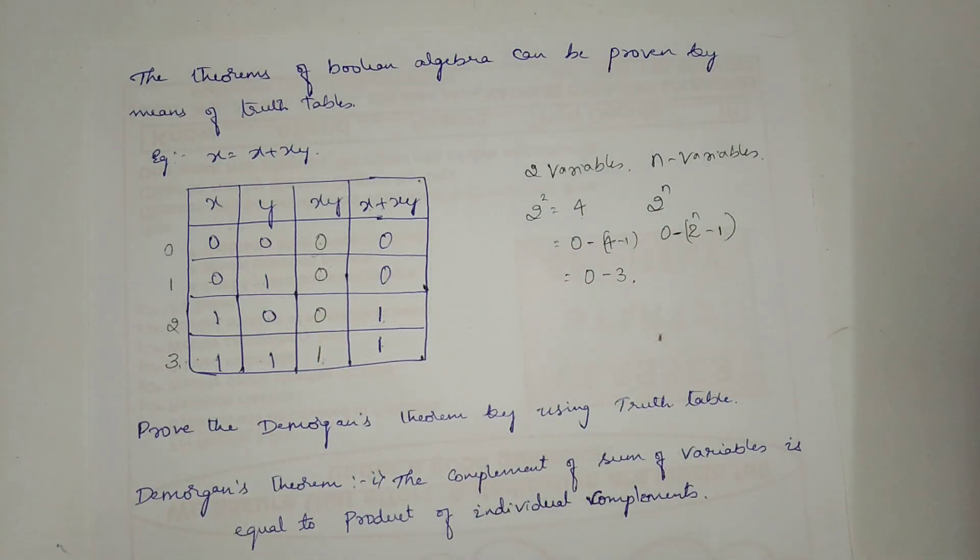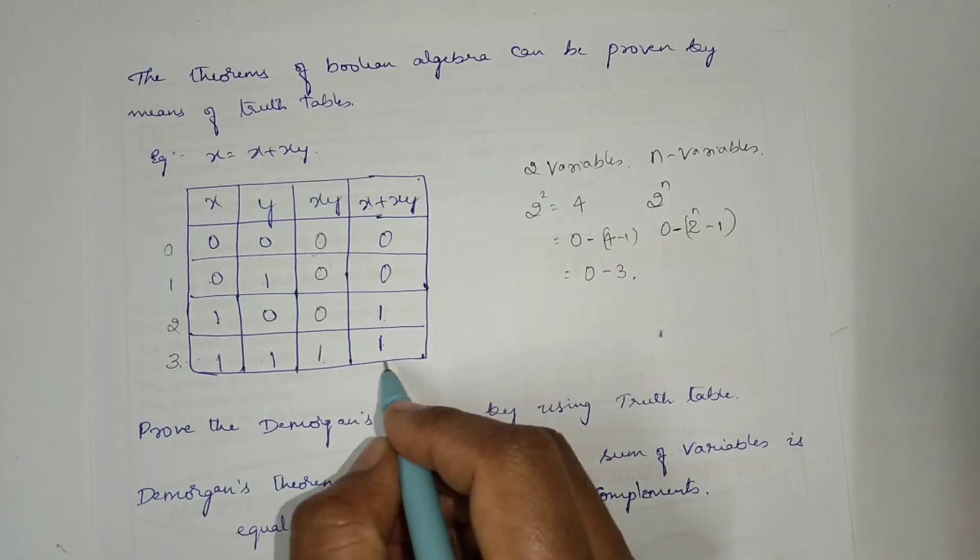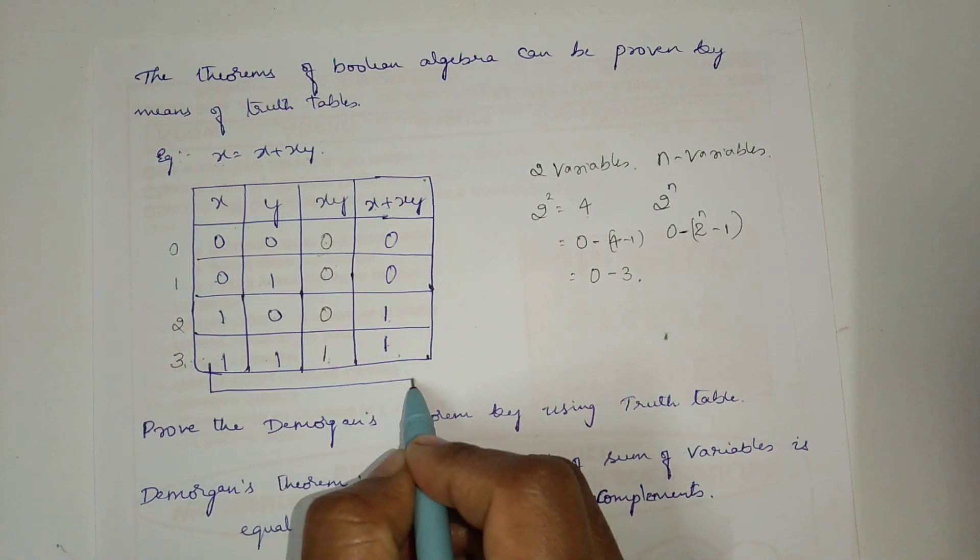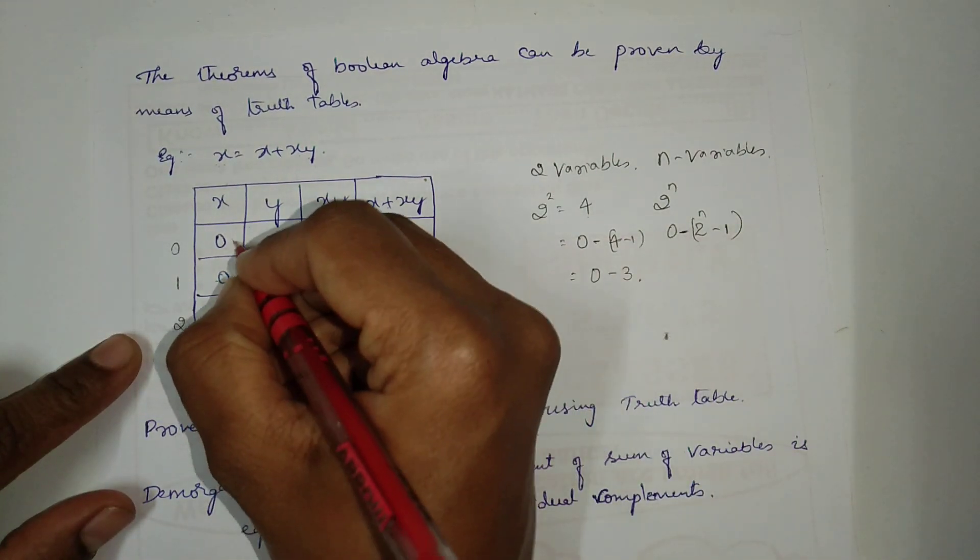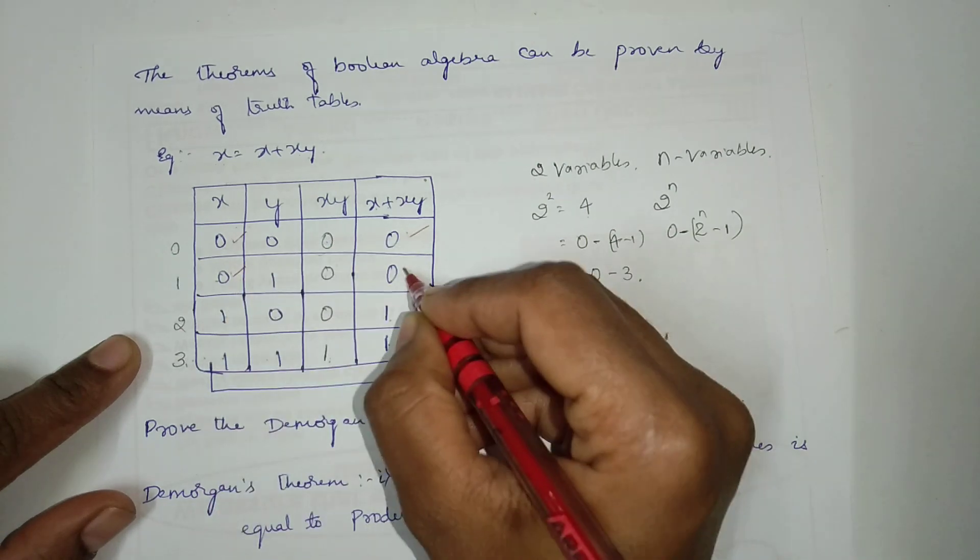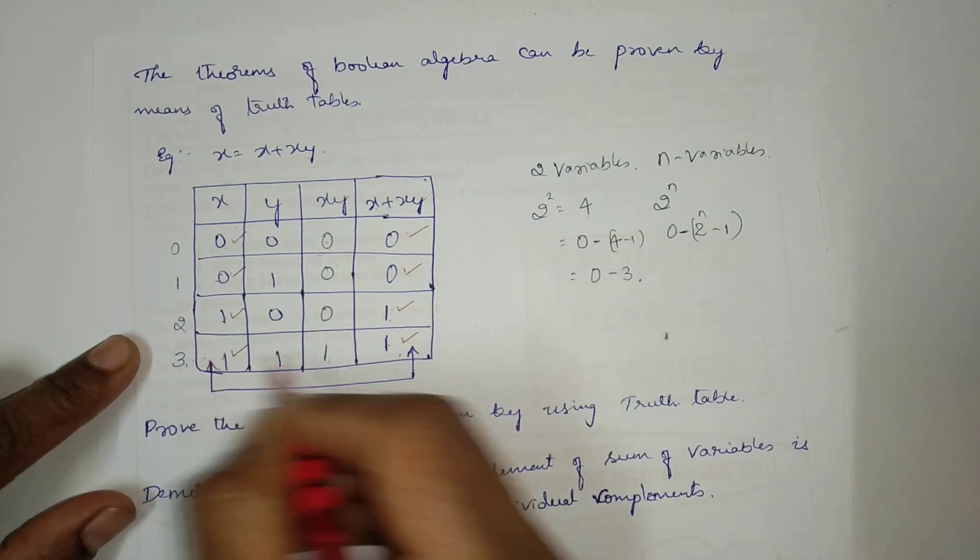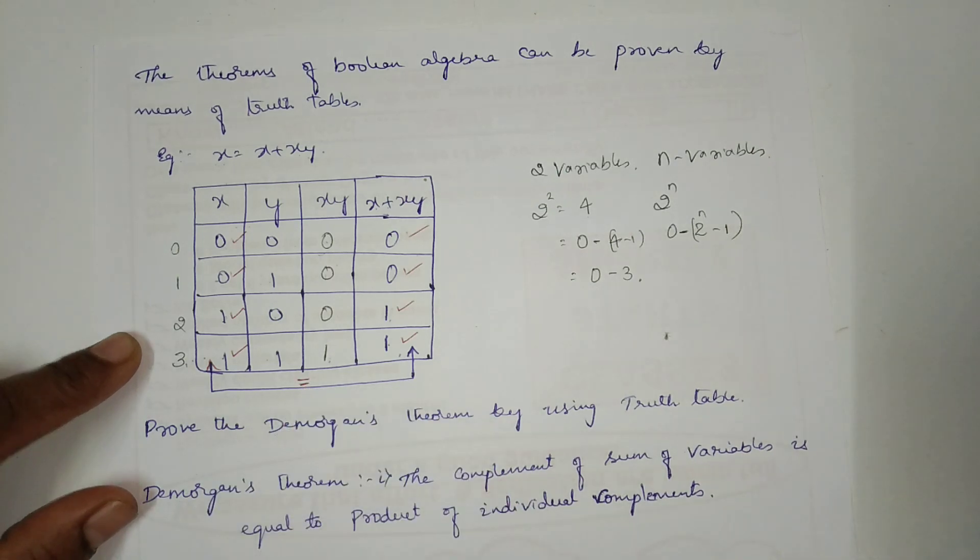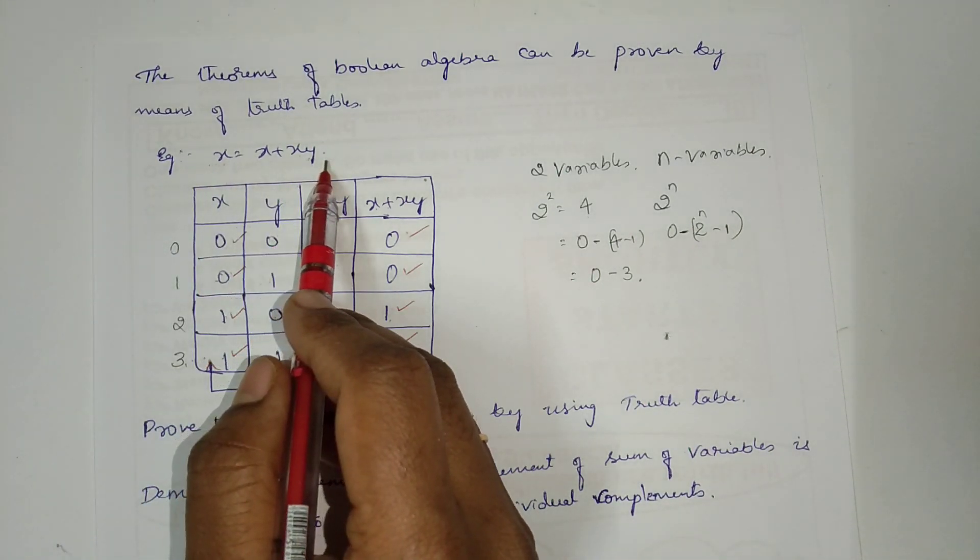Understood? Now, compare x and x plus xy. x, this column with this x plus xy. See, 0, 0, 0, 0, 1, 1, 1, 1. Both the entries are equal. So, x is equal to x plus xy. Is it proved? Understood?